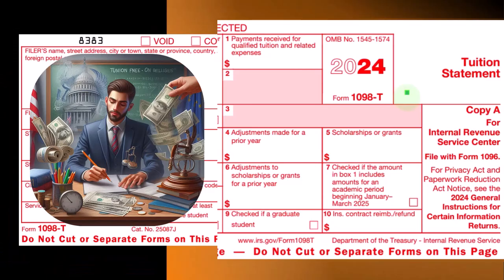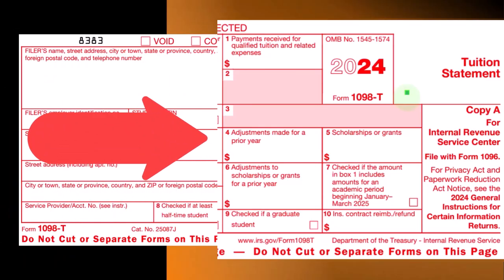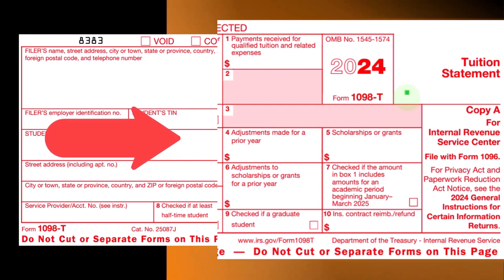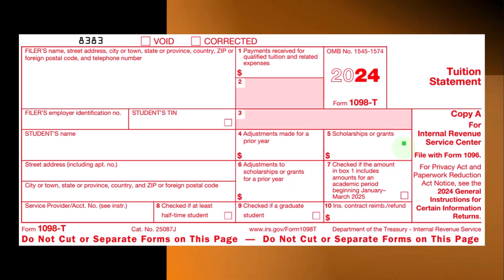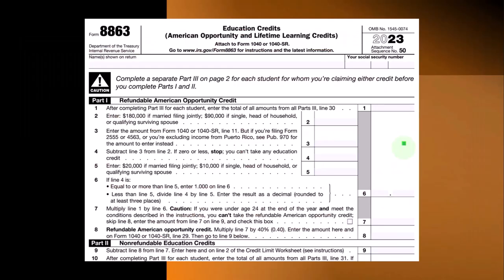If you can't get the American Opportunity Credit, the next option is the Lifetime Learning Credit. If you can't get that either, you'd typically look for a deduction in some other way. Remember that the 1098-T is an indication but may not reflect the exact amount used for calculating credits, due to complications like scholarships and payments for supplies and books.